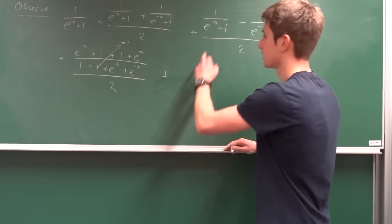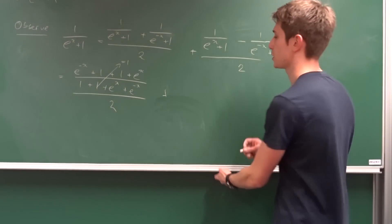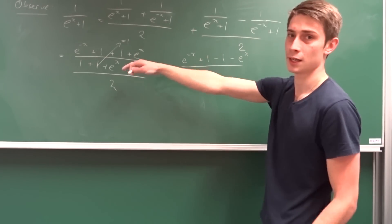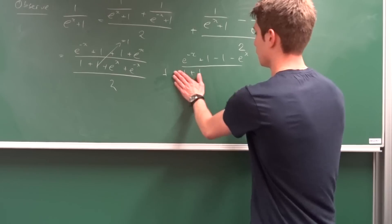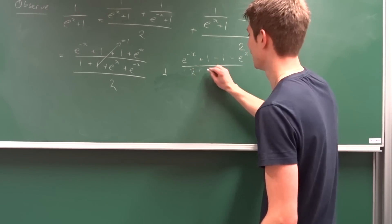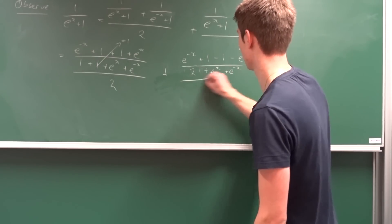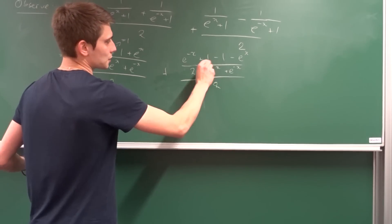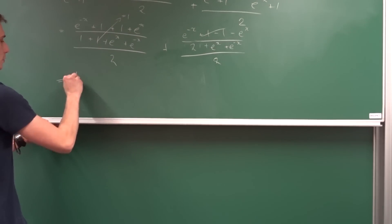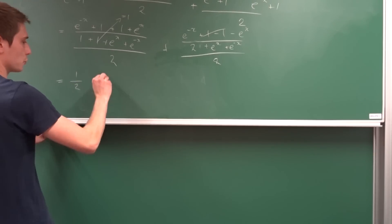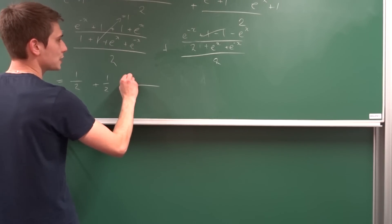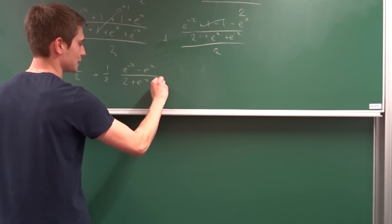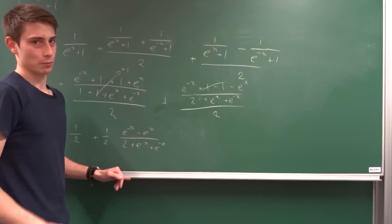For the second part, bringing those fractions together gives a numerator of e to the minus x plus 1 minus 1 minus e to the x, and the same denominator: 2 plus e to the x plus e to the minus x, all over 2. Combining everything, the original fraction equals one half plus one half times e to the minus x minus e to the x over 2 plus e to the x plus e to the minus x.